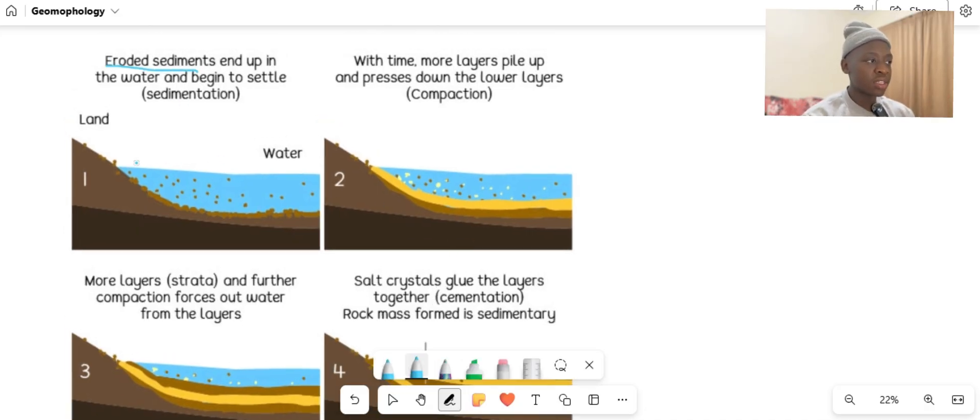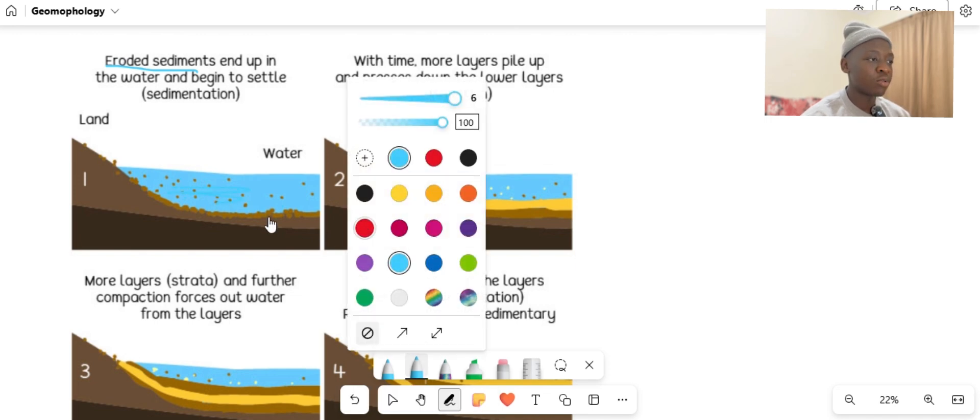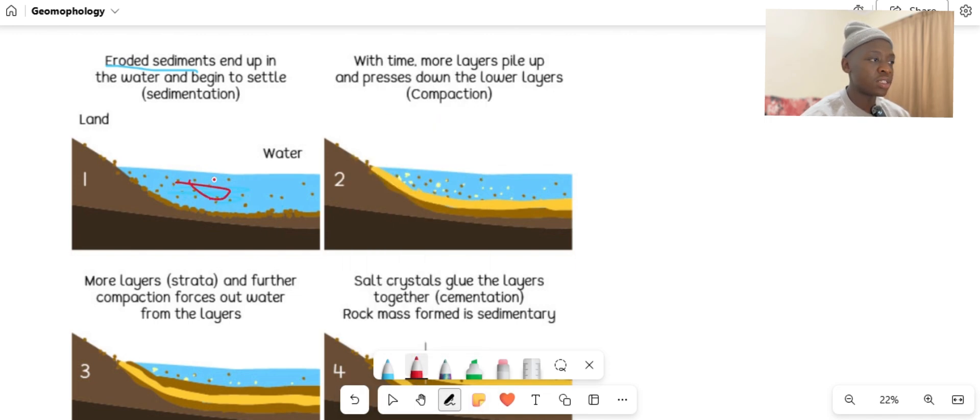The sediment, these particular things that you're seeing inside here are just sediments, meaning they're just materials. Let me change the color maybe it will be more proper for you. As you can see, the little dots, the brown dots, are the sediments or the materials that will accumulate.